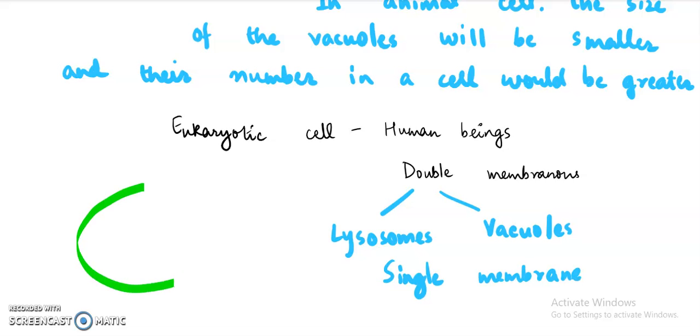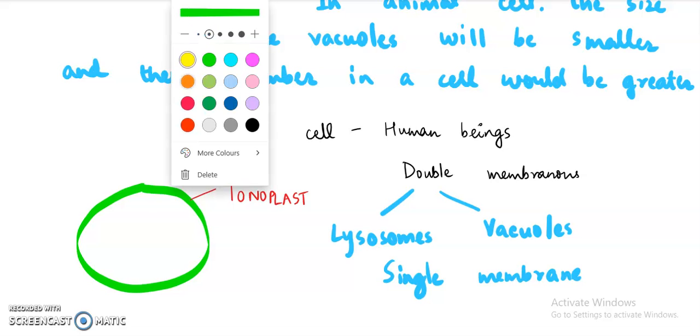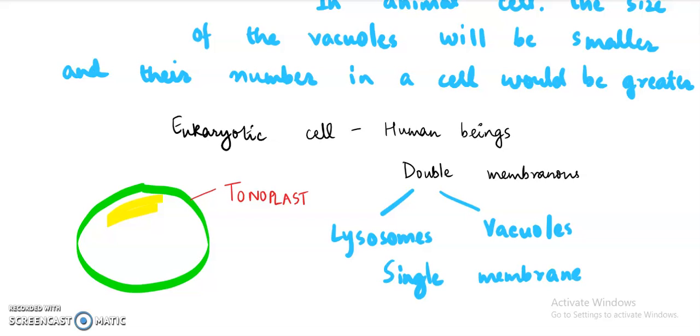Suppose this is the vacuole. Here I have drawn just one layer with the help of a green color. And this defines the membrane of the vacuole. And here it is very important to note that the membrane of the vacuole is known as tonoplast. This is very important question that what is the membrane of the vacuole being known as.